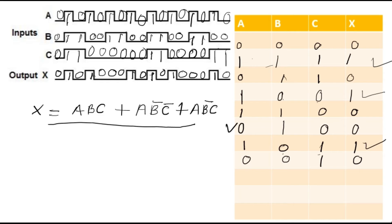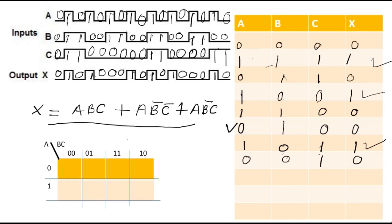Let's use the K-map. This is a three-variable K-map with A on one axis and BC on the other, with BC columns ordered: 00, 01, 11, 10. When A=0,B=0,C=0, X=0 — put 0. When A=1,B=1,C=1, X=1 — put 1. When A=0,B=1,C=1, X=0 — put 0. When A=1,B=0,C=0, X=1 — put 1. When A=1,B=1,C=0, X=0 — put 0.